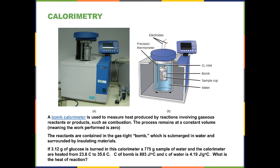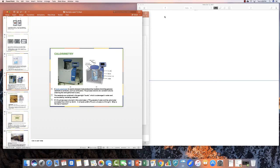The reactants are in this gas tight bomb, which is then submerged in water and surrounded by insulators. So if we burn glucose in this type of calorimeter with a 775 gram sample of water, and the water is heated up from 23.8 degrees to 35.6 degrees, and the bomb itself has a heat capacity of 893, and the specific heat of water is 4.19 joules per gram per degree centigrade, what is the heat of reaction? So let's take a look at how we would do this one.